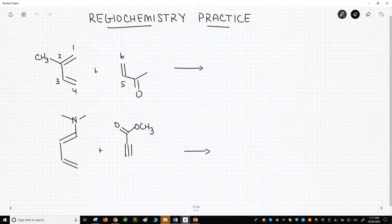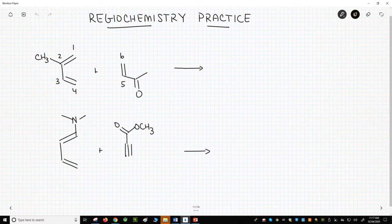Our first reaction involves a diene called 2-methyl-1,3-butadiene, also known as isoprene, and a ketone called 1-butene-2-one, or methylvinyl ketone, or just MVK.